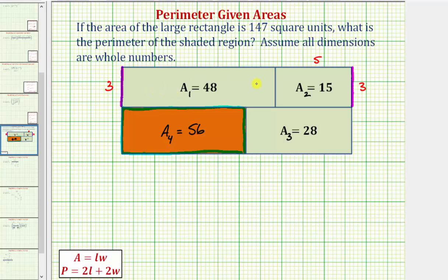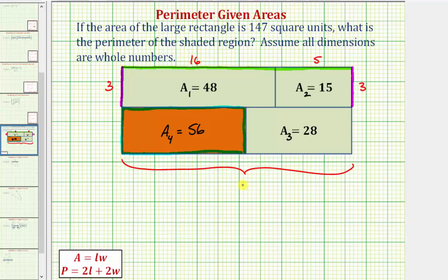If the area of this rectangle is 48 square units and this length is three units, because three times 16 equals 48, the length of this side would have to be 16 units. With these dimensions, the length of the long side of the larger rectangle would have to be 16 plus five, or 21 units, which means the opposite side would also have to be 21 units.